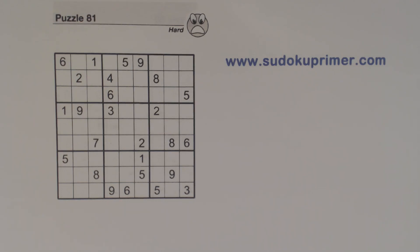Hello and welcome to this edition of Sudoku Primer videos. Today we're going to find quintuplets — that's five numbers in a group. Twins and triplets are pretty common and pretty easy to find. Quadruplets are less common, but quintuplets are quite rare. We'll find some in this puzzle. I'm also going to talk about finding twins to nonuplets, that's two numbers all the way to nine numbers, and give pointers on how to locate them.